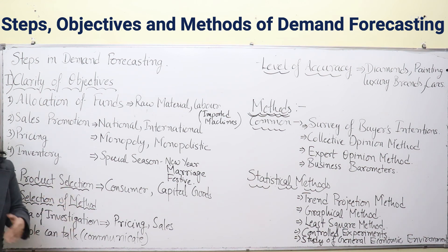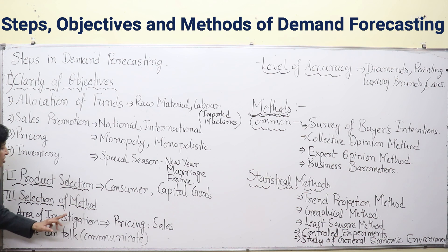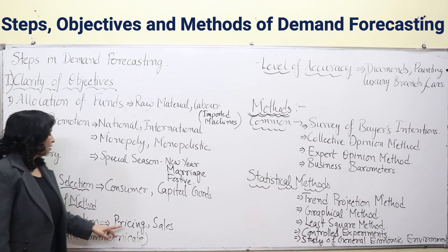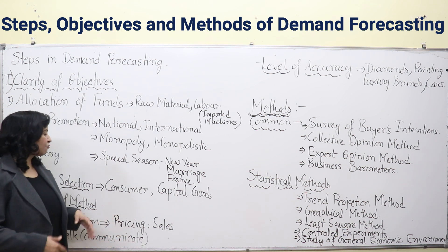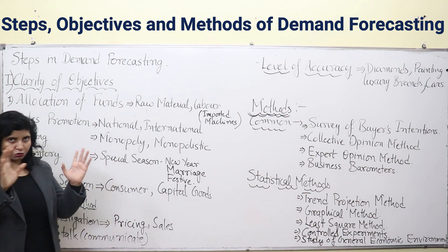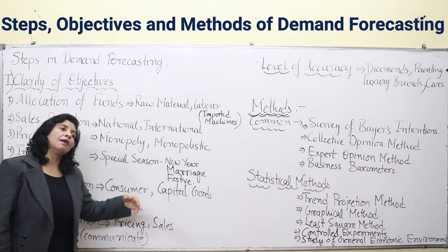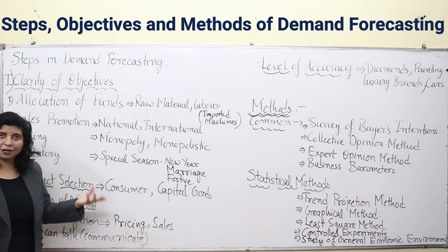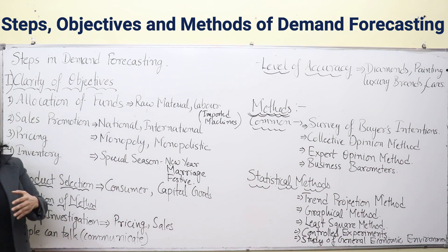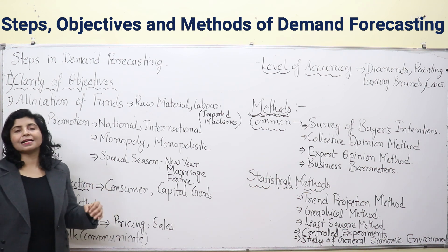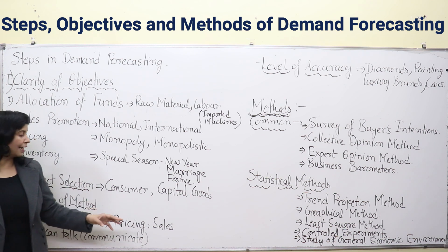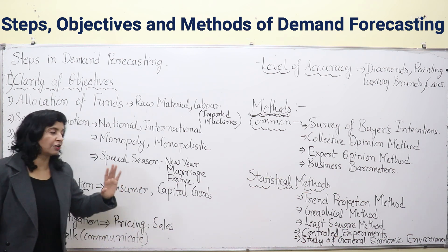Now, selection of method. Before selecting a method for demand forecasting, we need to understand three points. First is the area of investigation — what you intend to do with your demand forecasting. If you are focusing on a pricing strategy and what price you should keep, then you should go for a different method. If your target is sales promotion or marketing — advertisement through print media or digital media — then you can go for a different type of method for demand forecasting.